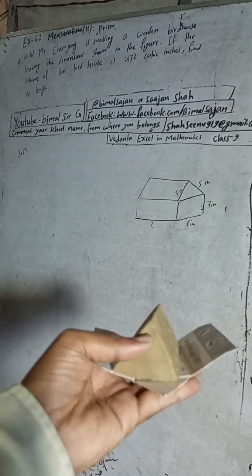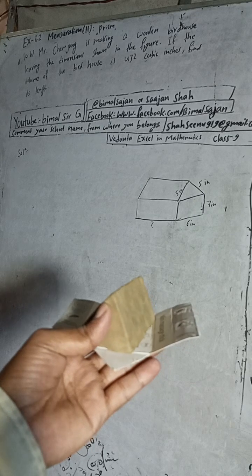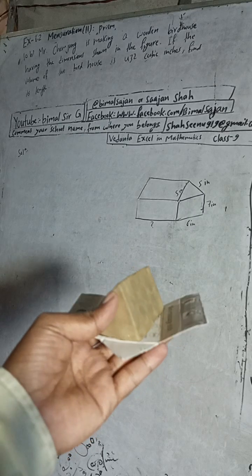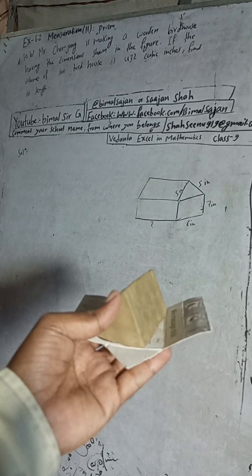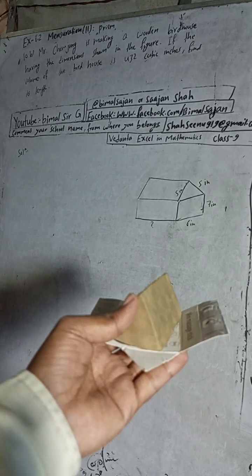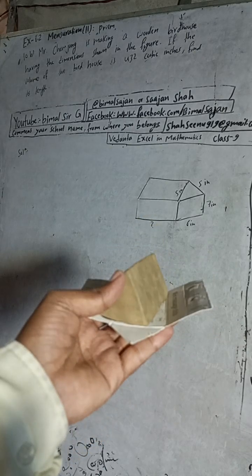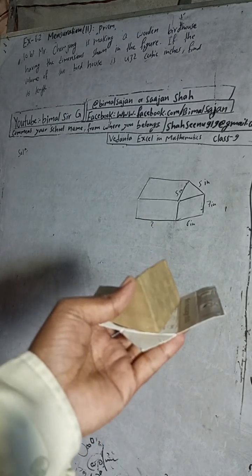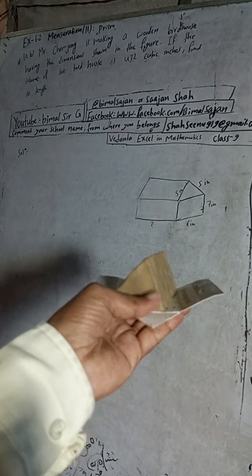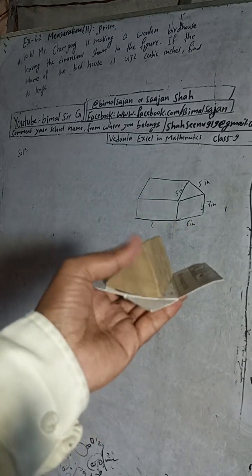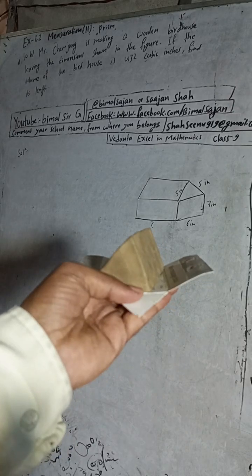But that is not a triangular prism. That is a pentagonal prism — it has five sides. So the shape here is a pentagonal prism. The front side of this prism is called the area of cross section.